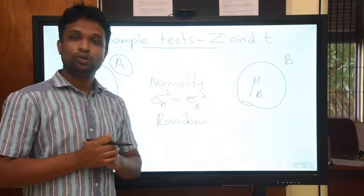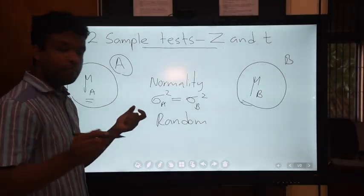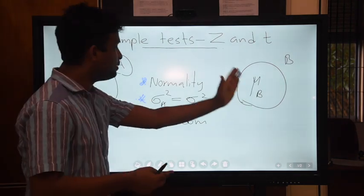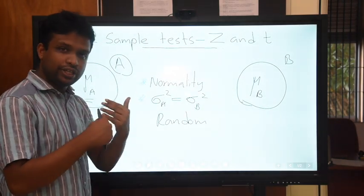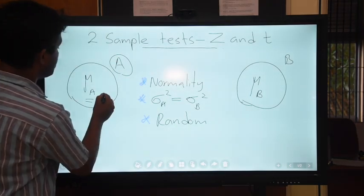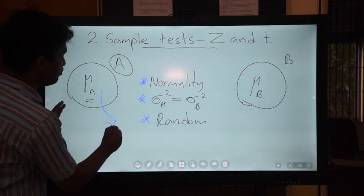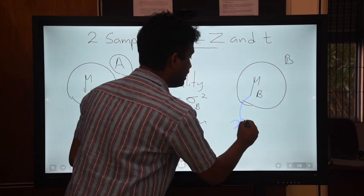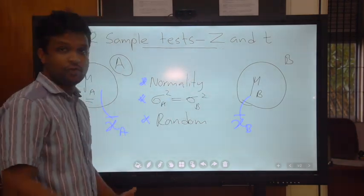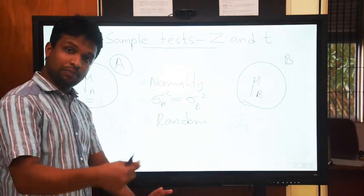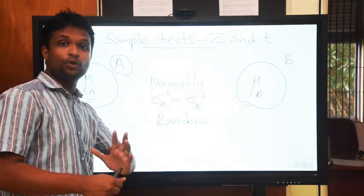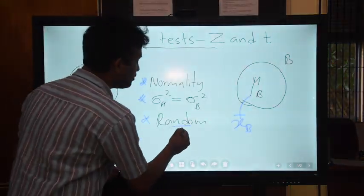For the two-sample z-test or two-sample t-test we have three assumptions. First, normality — both distributions should be normally distributed and the variances of population A and population B should be almost equal, though nowadays we have techniques to overcome this assumption. Second, randomness — we take a sample from population A with mean x-bar A and compare against x-bar B from population B. Since we can't compare total population means directly, those samples must be representative and adequate in size — they must be random samples.